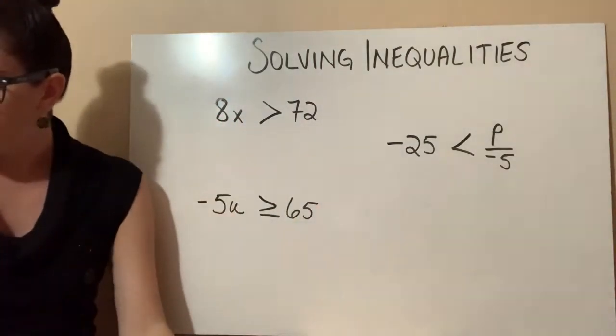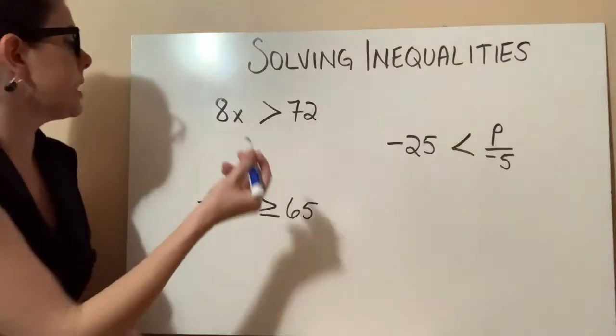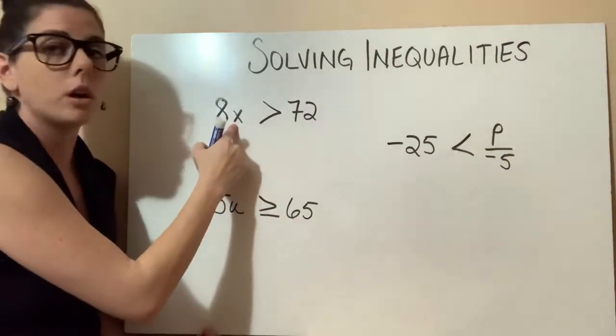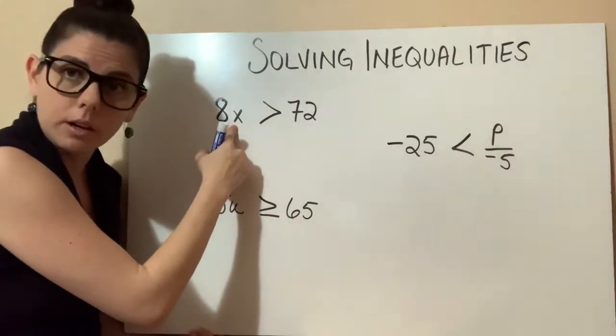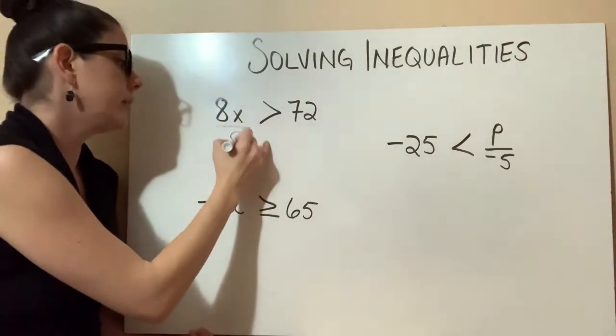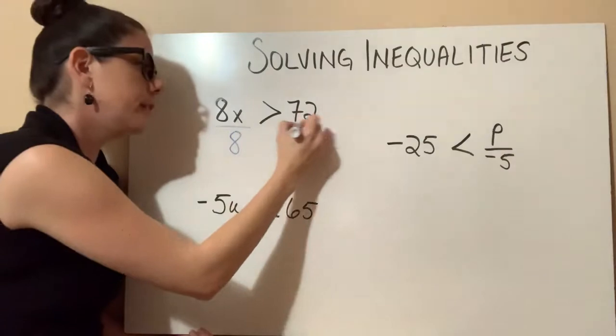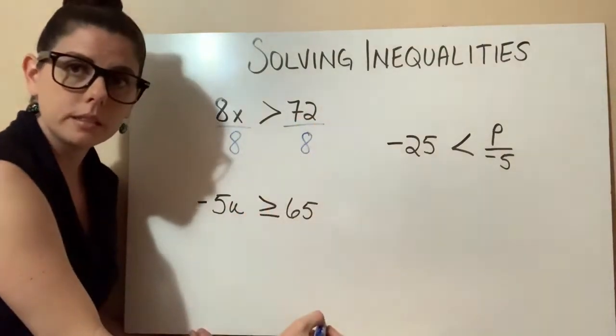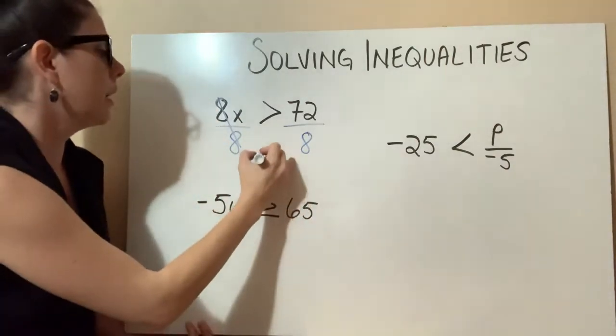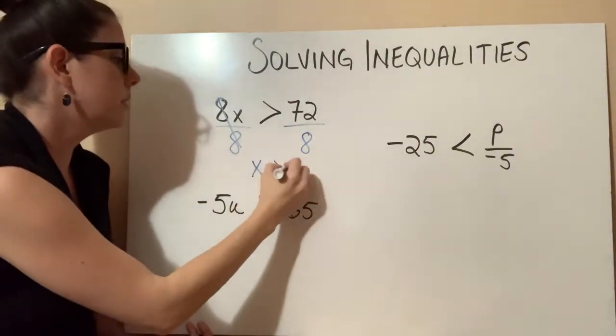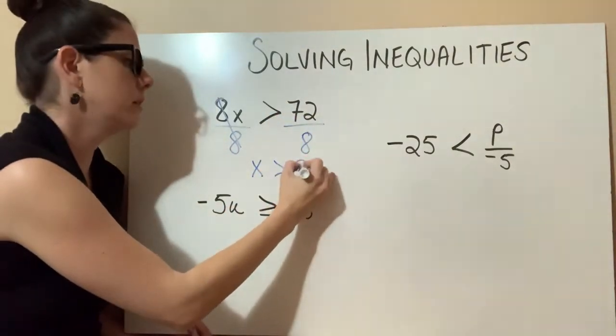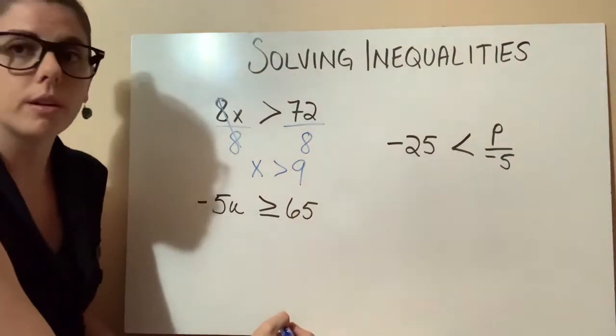In our first example, we have 8 times x is greater than 72. Our goal is to get this x by itself so that we can graph it. Since it's being multiplied by an 8, we're going to divide by an 8 on both sides. The 8s on the left are going to cancel out, and we'll be left with x is greater than 72 divided by 8 is 9.